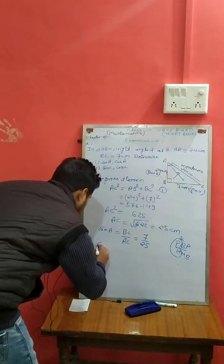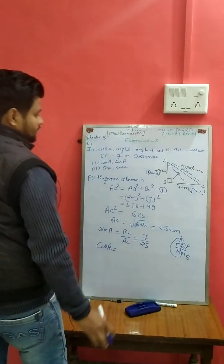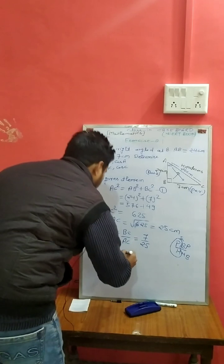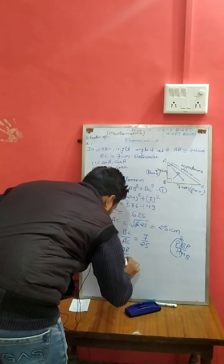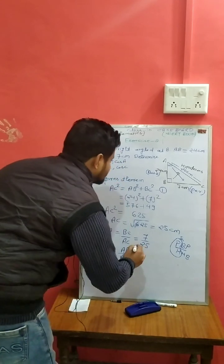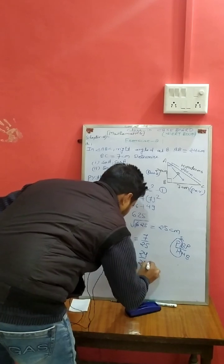And cos A: base upon hypotenuse. Base upon hypotenuse, which is AB upon AC. AB is 24 upon 25.